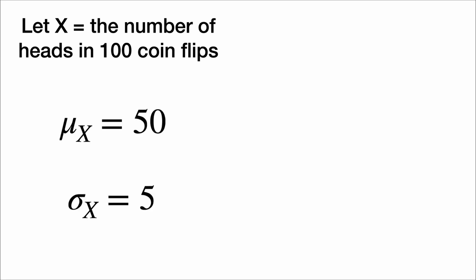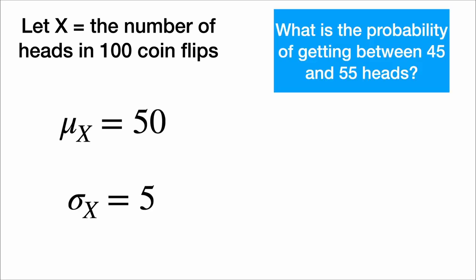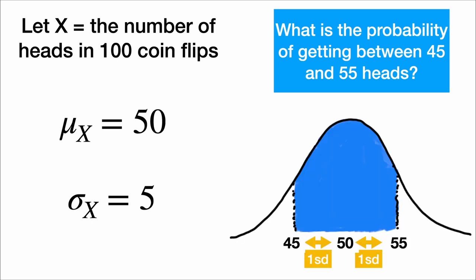The average number of heads we'll see is, of course, 50, and the standard deviation is the square root of n times p times 1 minus p, which is just 5. So the average is 50, the standard deviation is 5. What is the probability of getting between 45 and 55 heads? Well, those are each one standard deviation away from the mean, so it's about 68%. Calculating this exact probability with binomial distributions would involve heavy use of the calculator, but here we were able to do this just in our heads.